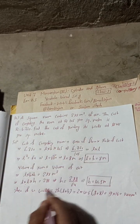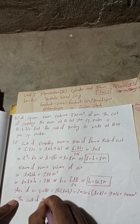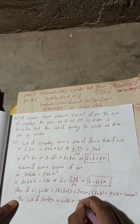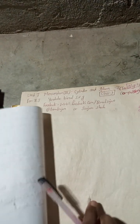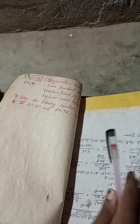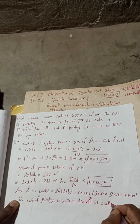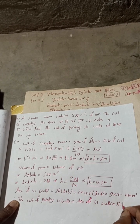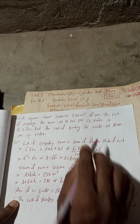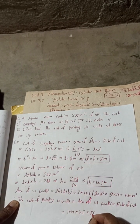Now we find the cost of painting. Cost of painting 4 walls = area of 4 walls × rate of cost = 144 × 45 = Rs. 6,480. The rate given is Rs. 45 per square meter, so multiplying 144 by 45 gives us Rs. 6,480.